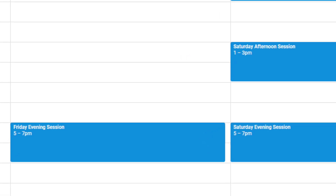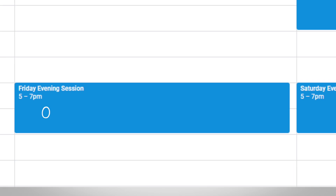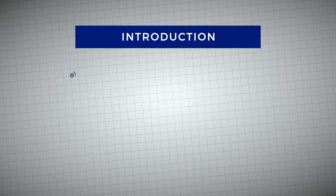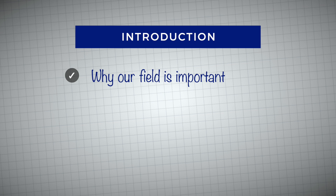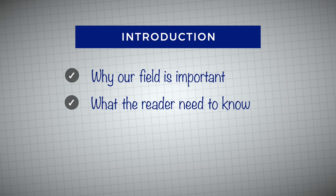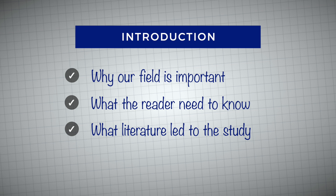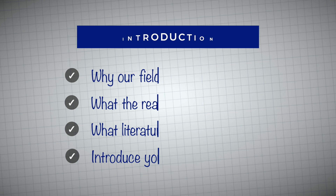Friday evening is a two-hour writing session focused on creating your outline. With this outline, we're going to start with the introduction: write down why your field is important, what the reader needs to know to understand the research, what literature led to the study, and some notes on how to introduce the reader to your study, which will likely be your final paragraph.